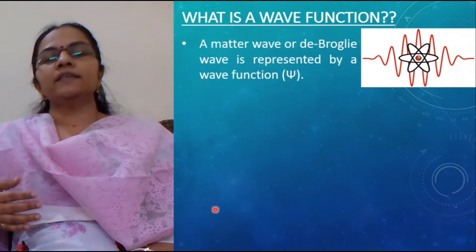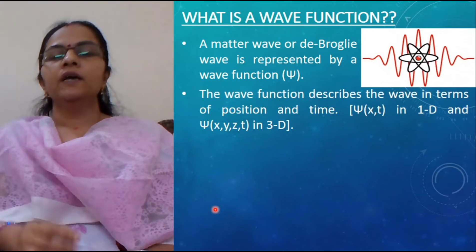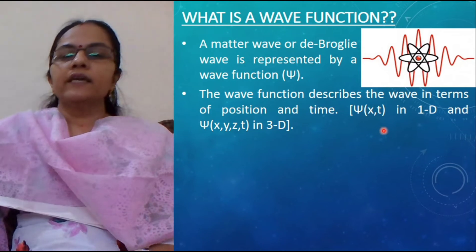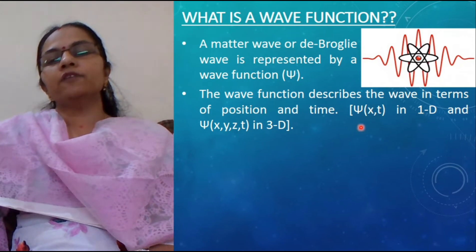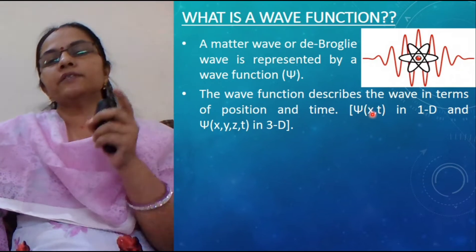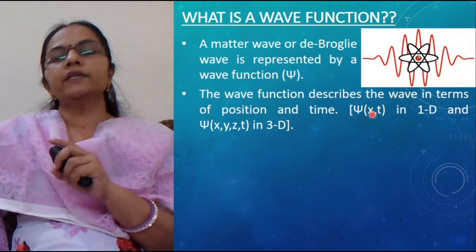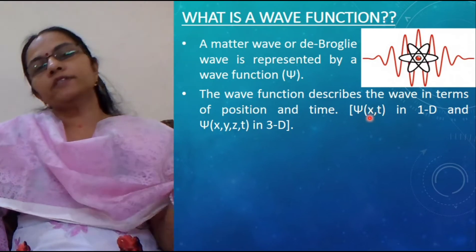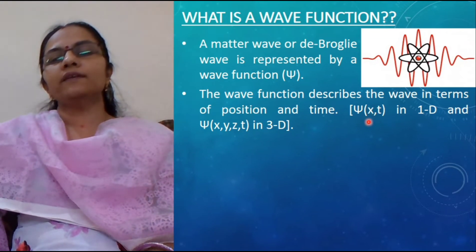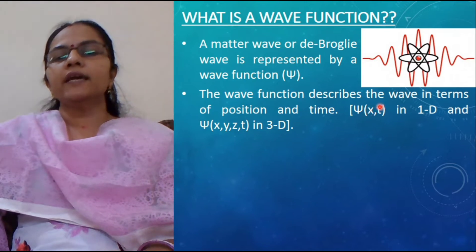The wave function is a function which represents a matter wave or de Broglie wave. It describes the wave in terms of its position and time — that is psi of x and t in one dimension. Here psi is the wave function in terms of its position x, since we have taken this in one dimension. The position can be represented by a single coordinate; if it is in the x direction it is written x, but you can write y or z as well. So psi(x,t) is the wave function in one dimension, represented by position x and time coordinate t.